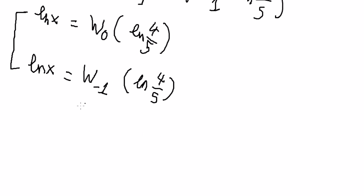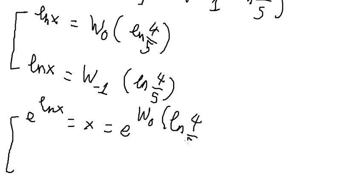So we put e to the power of s on both sides. This one you get s equal to e to the power of W_0 of ln 4 over 5, and the second one.